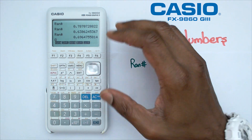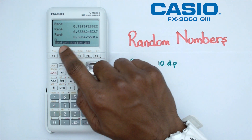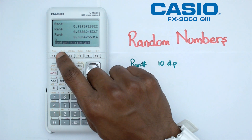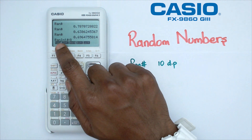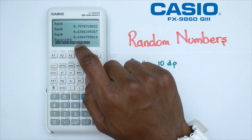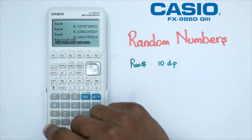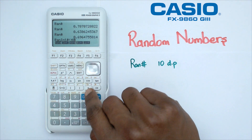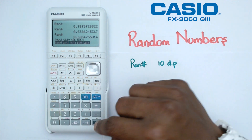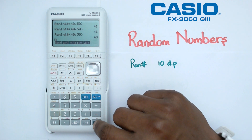But let's say we want to find a random number between 40 and 50. In that case we're going to click on F2, which says Int — that's for a random integer. When we click on F2 it will say random integer number, and we need to tell it the smallest and largest number. So I'm going to put in 40, then a comma, then 50, and close the brackets.